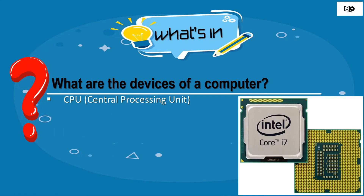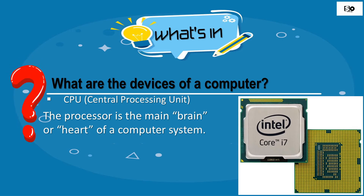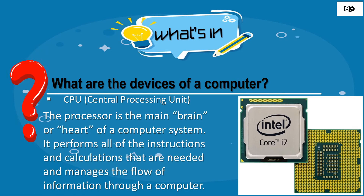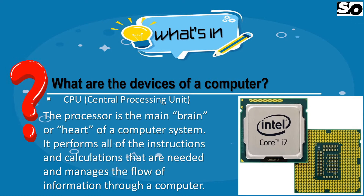CPU, or the Central Processing Unit. The processor is the main brain or heart of a computer system. It performs all of the instructions and calculations that are needed, and manages the flow of information through a computer.